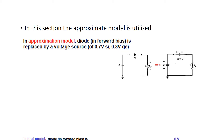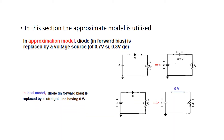In the next video we will study about the ideal model. In the ideal model of diode, the diode is replaced simply by a straight line — no voltage drop, 0 volt. So just keep this in mind.